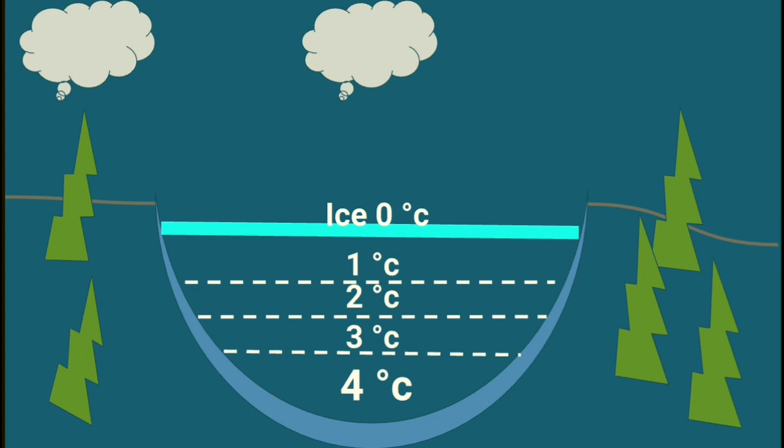On further cooling to 0 degrees Celsius, surface water freezes and a layer of ice is formed on the surface, whereas water at the bottom remains at 4 degrees Celsius. As the layer of ice on the surface acts as a good insulator,